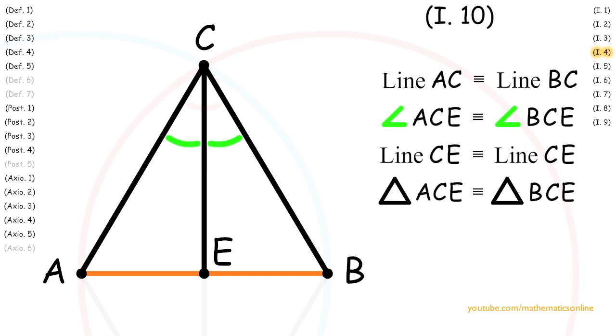Therefore, it follows that line AE is congruent to line BE. And so now it has been proven that line AB has been bisected into two congruent lines.